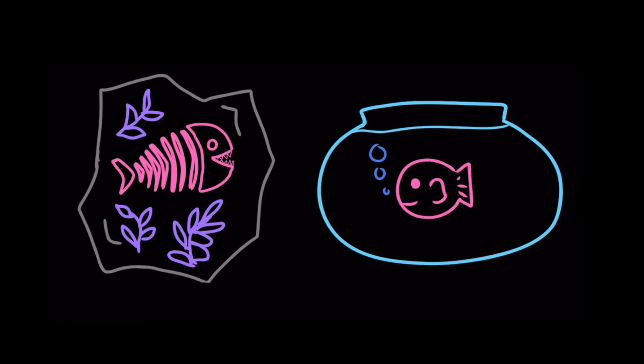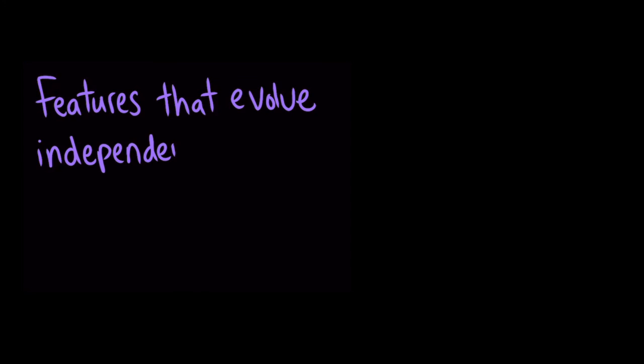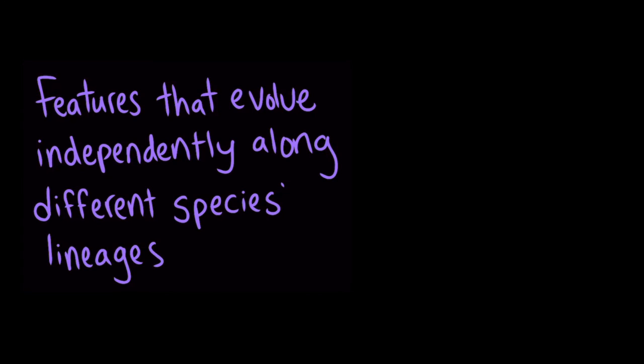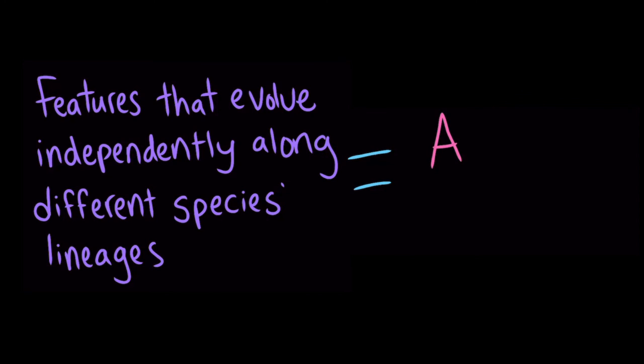Sometimes, scientists find features that seem to be homologous at first glance, but the features actually evolved independently along different species lineages. These features are called analogous features.